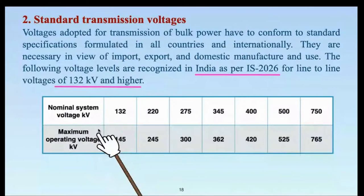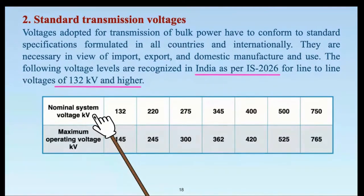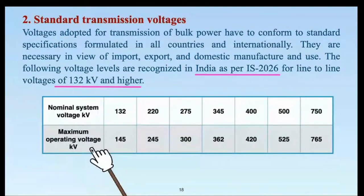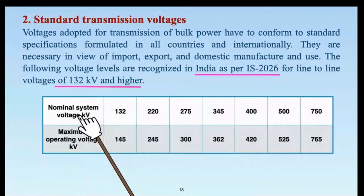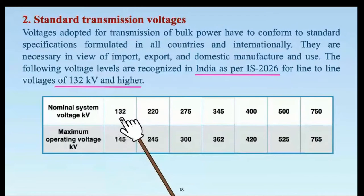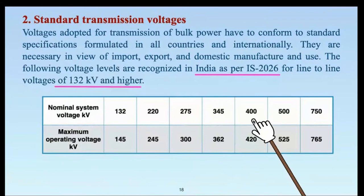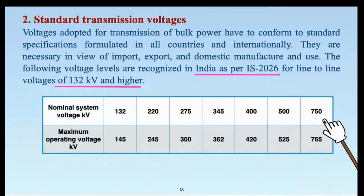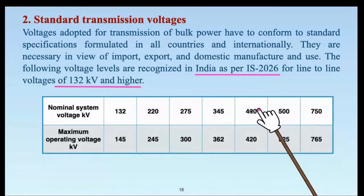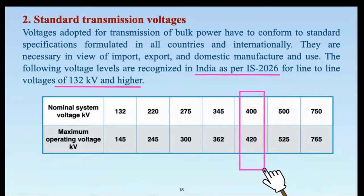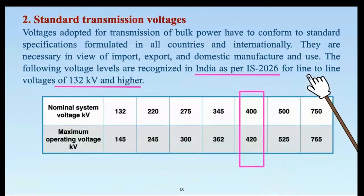The first domain is nominal system voltage, also known as the rated transmission voltage for the transmission network. The second is the maximum operating voltage — the highest value of voltage the system will be able to carry while handling power. Nominal system voltage levels in India are: 132 kV, 220 kV, 275 kV, 345 kV, 400 kV, 500 kV, and 750 kV. The most common long-distance transmission voltage is 400 kV.